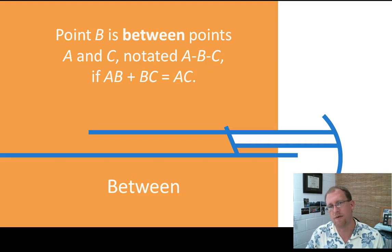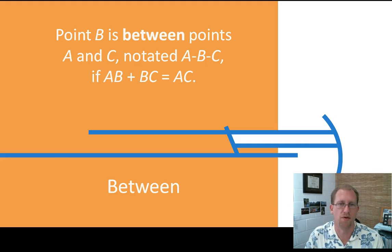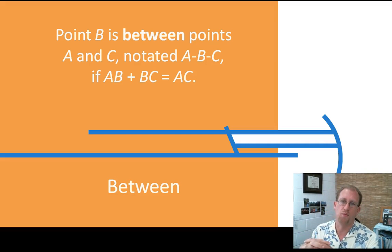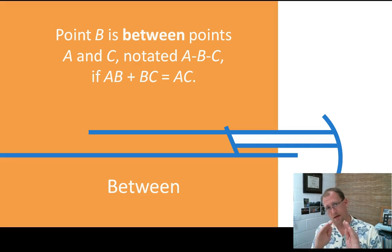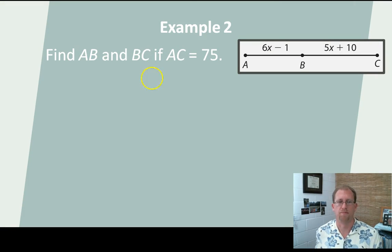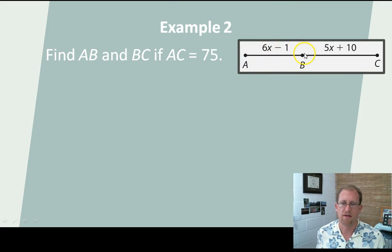Another definition — we've already talked about betweenness. But now that we are talking about measuring segments, we can do something with a point between two other points. If we have points A, B, C so that B is between A and C, then the length of AB adds up to the length of BC. You can add segments and get the length of the larger segment as long as the middle point is actually between the endpoints.